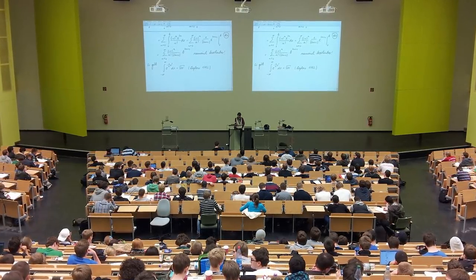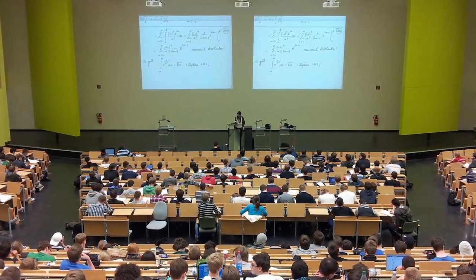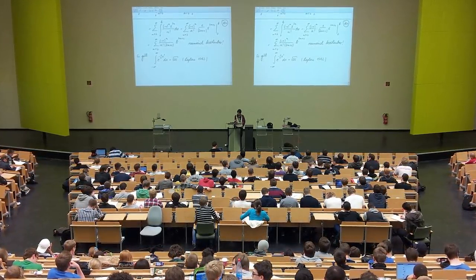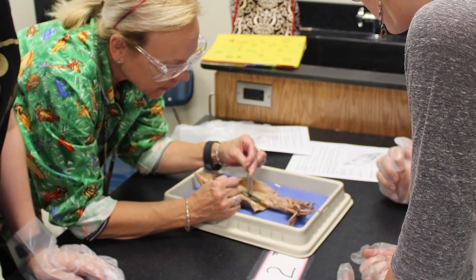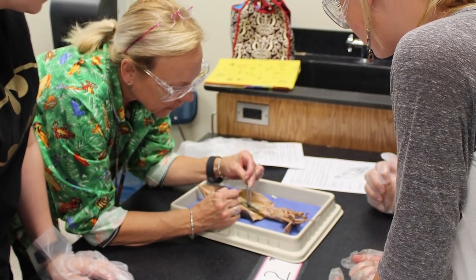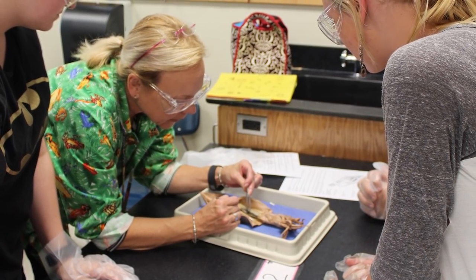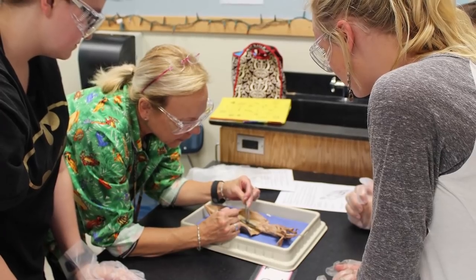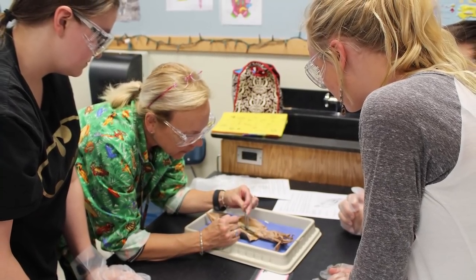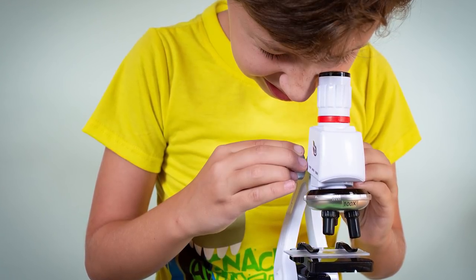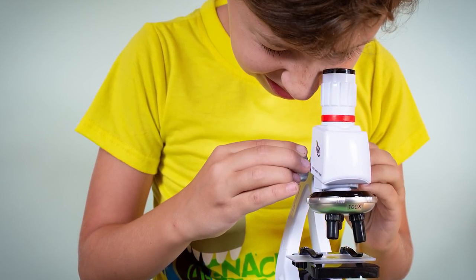Of course, even at the college level every experiment students are asked to carry out has been done countless times and the results are well known. The theories being used to predict the results are well established. The purpose of the experiments isn't really to test the theories, but to teach students about experimental work and to show the students that the theories they're being taught do hold up when tested experimentally. Not because this isn't known period, but because it may not be known to the students. And the best part is that they are shown by doing the experiments themselves, ruling out the possibility that they are being misled.